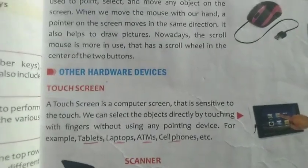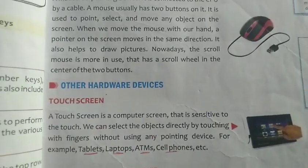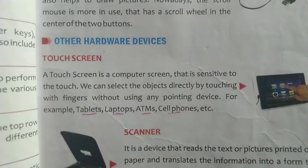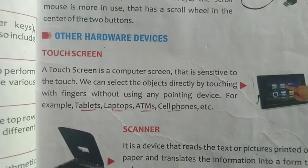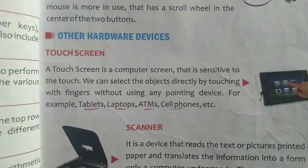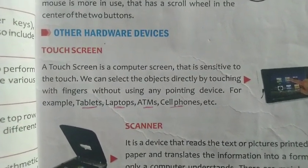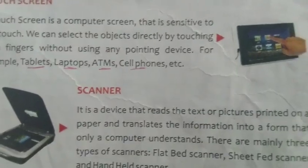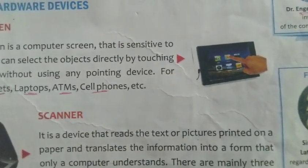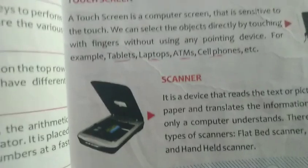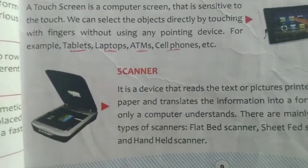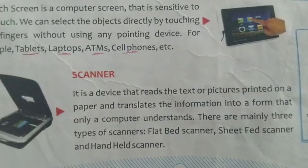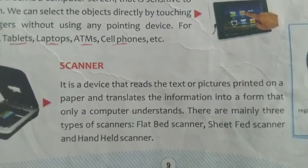Next is the touch screen, which refers to smartphones or tablets that work with the help of finger touch. Next is the scanner, which is also a very important device. It looks like a photocopy machine — normally called a Xerox machine — where we can make a copy of a document and store it in our computer.